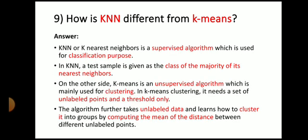Next question: how is KNN different from K-means? These are two different algorithms in machine learning. KNN or K-nearest neighbor is a supervised algorithm which is used for classification purpose. In KNN, a test sample is given as the class of majority of its nearest neighbor. On the other hand, K-means is an unsupervised algorithm which is mainly used for clustering. In K-means clustering, it needs a set of unlabeled points and a threshold only. The algorithm further takes unlabeled data and learns how to cluster it into groups by computing the mean of the distances between the different unlabeled points.